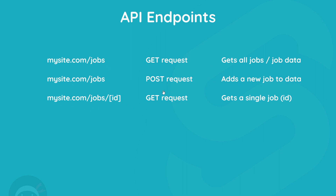We might also have a GET request handler to /jobs/:id where id is a changeable route parameter — for example 123 — and that would be to get a single job based on that id. The data would be sent back to the front end in JSON format. So for example if we wanted to send a request from the front end to get all jobs, we'd use a fetch request to mysite.com/jobs and the server route would handle that and send back the JSON data.